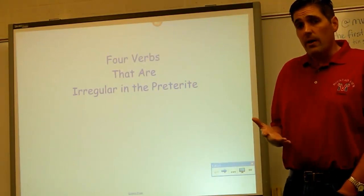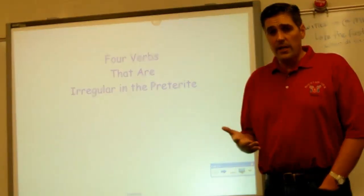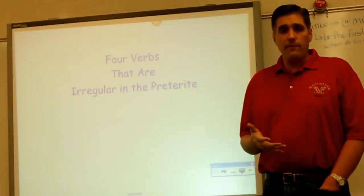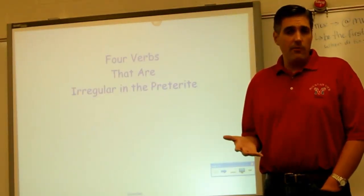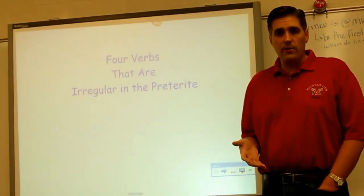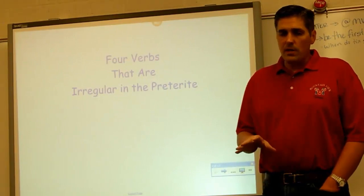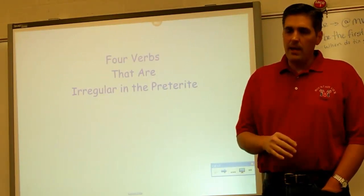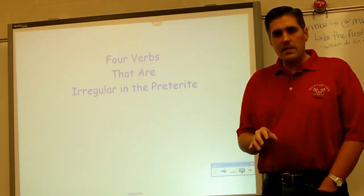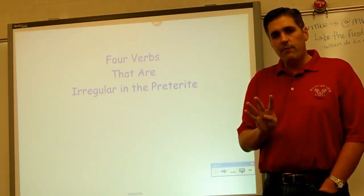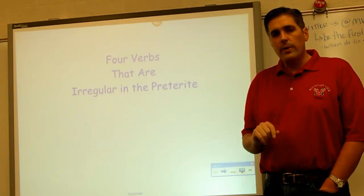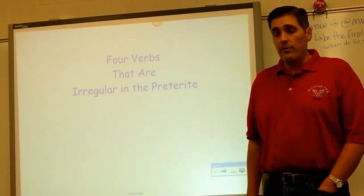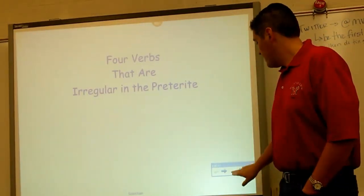Our last lesson we talked about ser and ir — that they are fui, fuiste, fue, fuimos, fueron. So we talked about those; if you don't know those, go back. But in this lesson we've got four irregular preterite verbs.